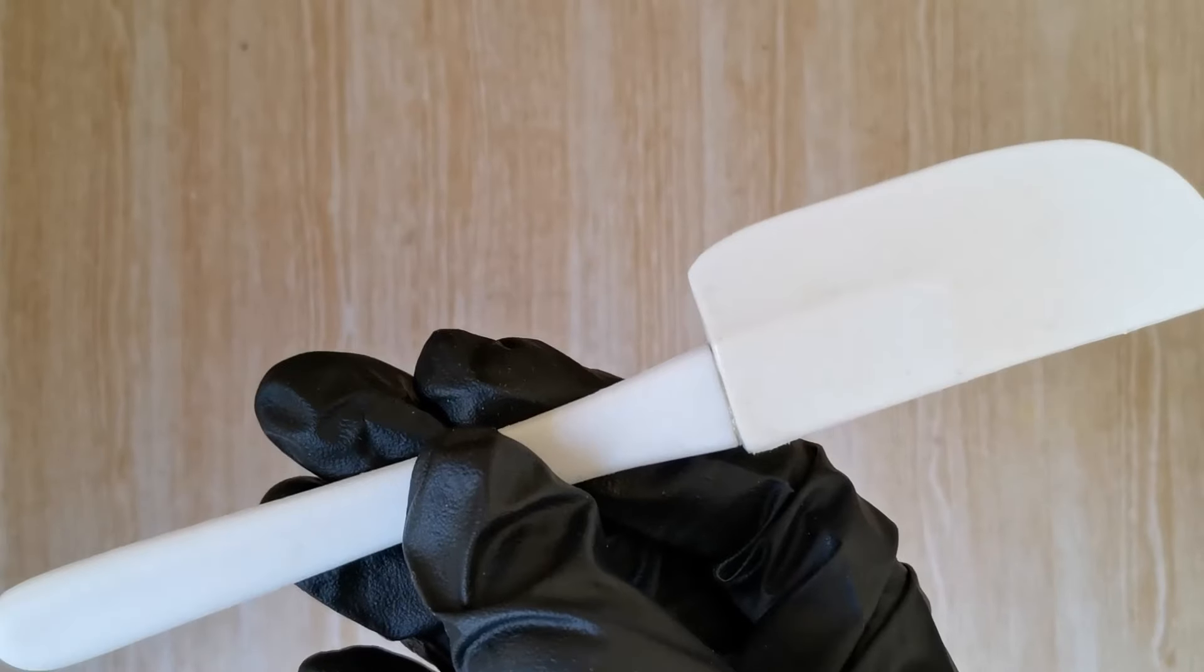Personally, I like to use a mini baking spatula, because it has a good surface area. I can just reuse it every time I mix up resin, so it makes less waste too.